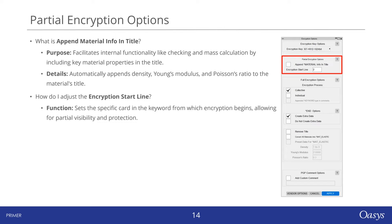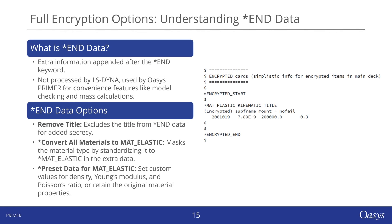Moving on to full encryption, we introduce options involving end data. End data is essentially additional information that follows the end keyword and is placed at the end of the keyword file. This data isn't processed by LS-Dyna, but is utilized by Primer for various functions — including model checking, performing mass calculations, reserving certain IDs, and keeping track of the information you've encrypted.